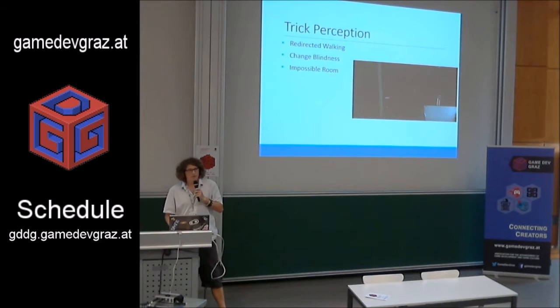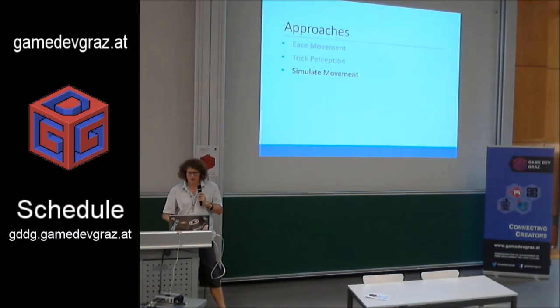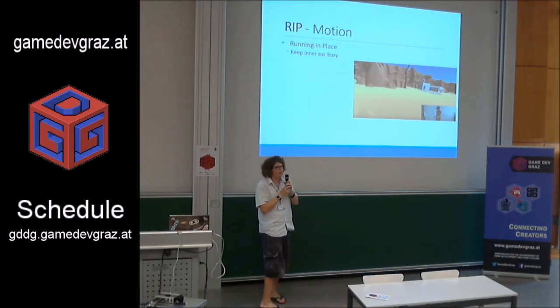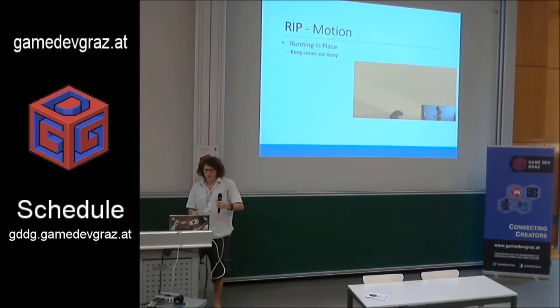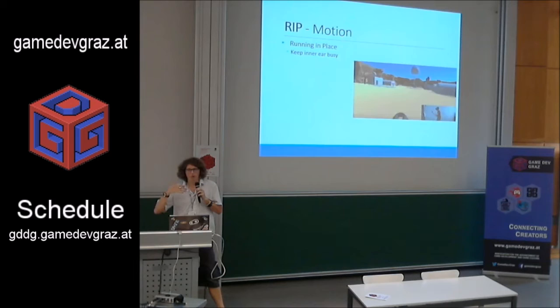The third approach of how to move through the virtual world is to actually simulate the movement, so the player actually moves. One example is running in place. If you look at the bottom corner, the player has both Vive controllers — one stuck out, one somewhere here — and then you just run in place. Apparently that's good enough to trick the inner ear that your body is moving, even though you're actually just jumping in place. So that surprisingly works.